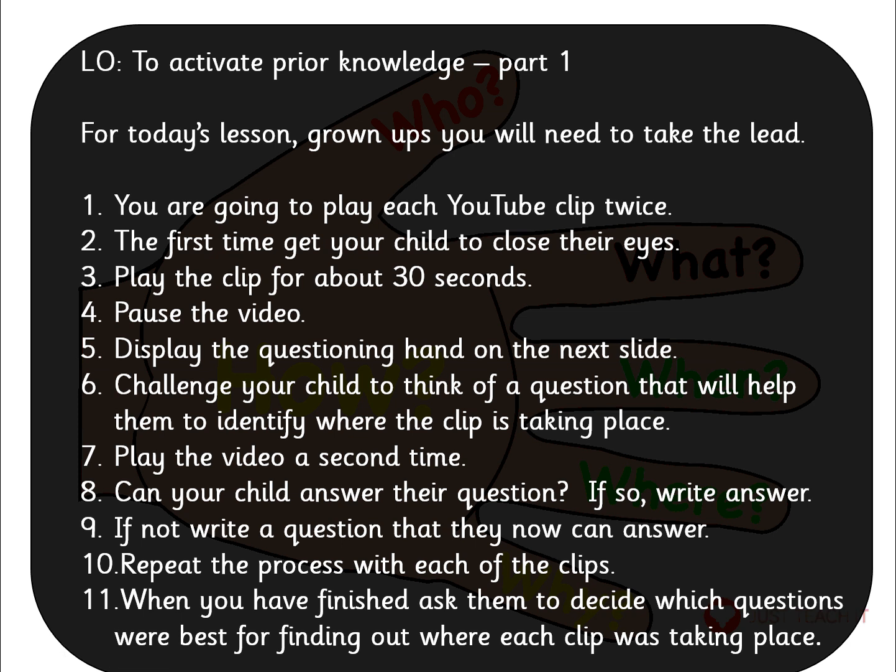I know they'll do brilliantly. So I'm just going to go through what needs to be done for the grown-ups. What you're going to need to do, grown-ups, is play each YouTube clip twice. The YouTube clips are underneath this lesson on the lesson plan. First time, get your child to close their eyes, play the clip for about 30 seconds, and pause the video.